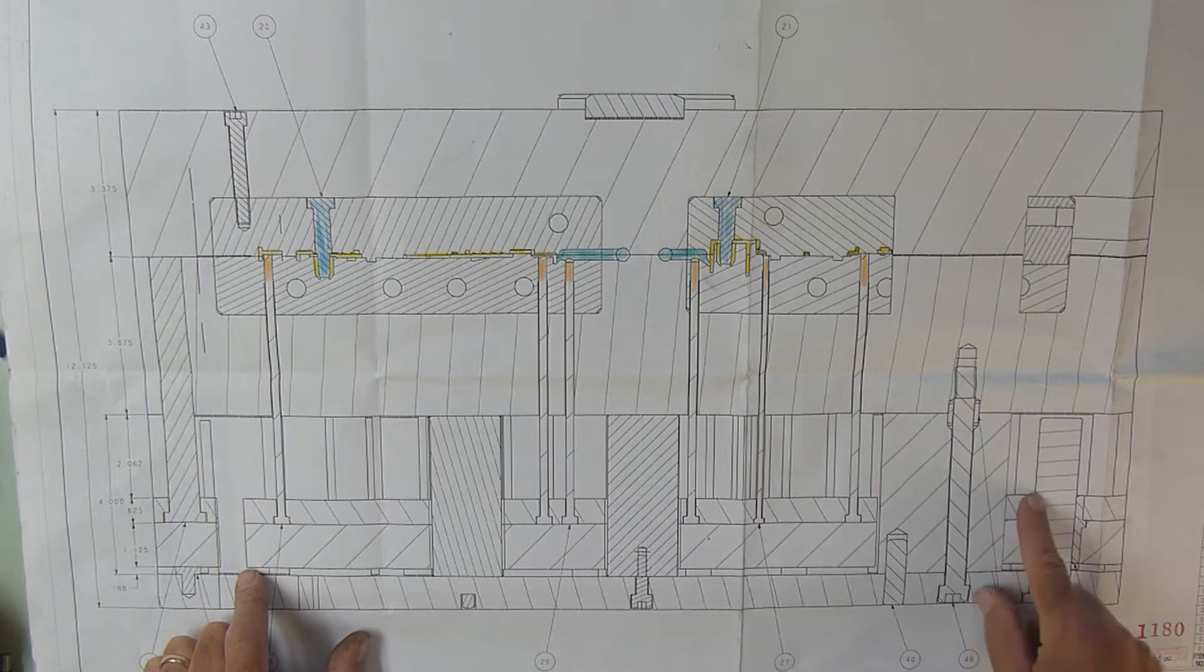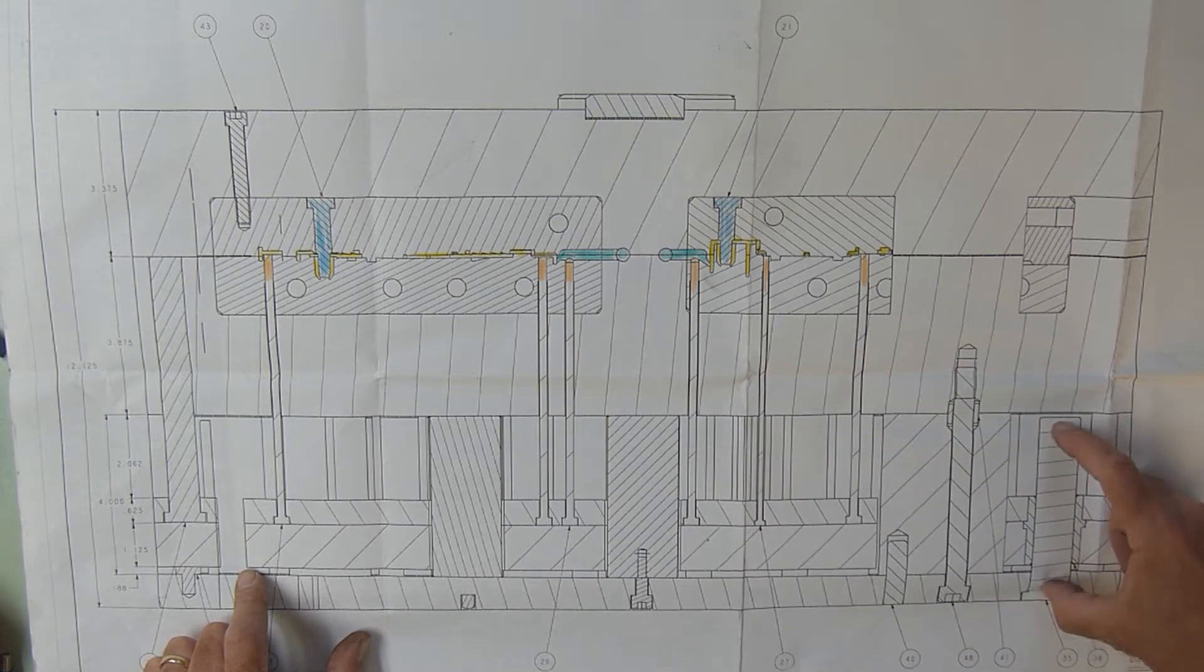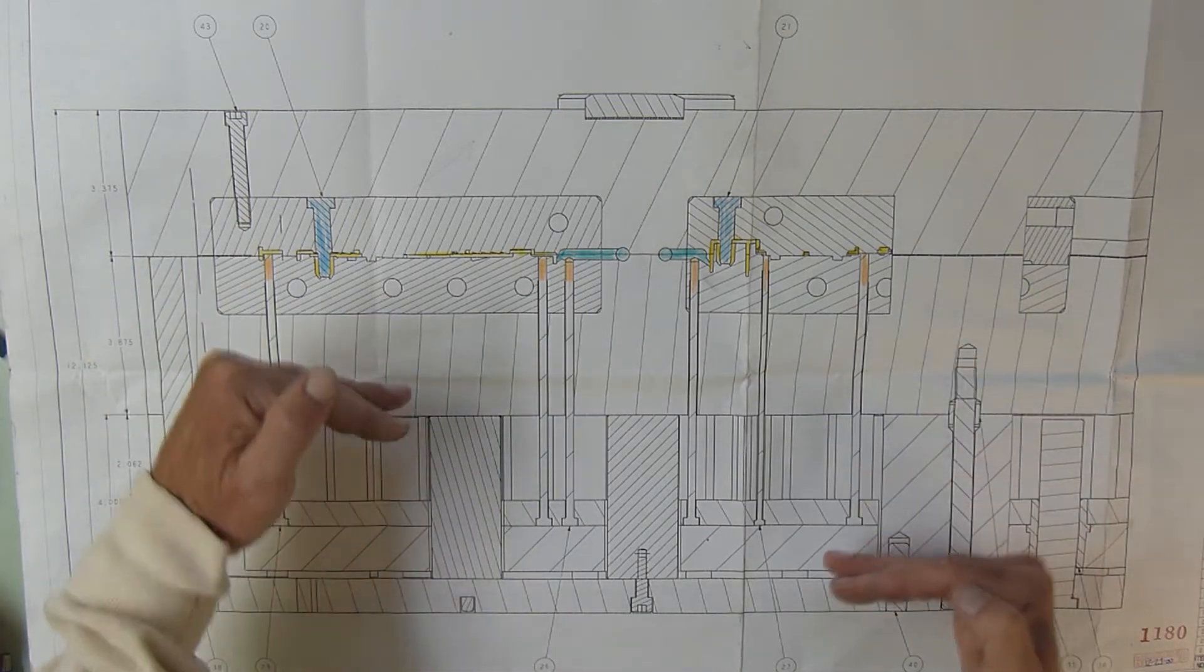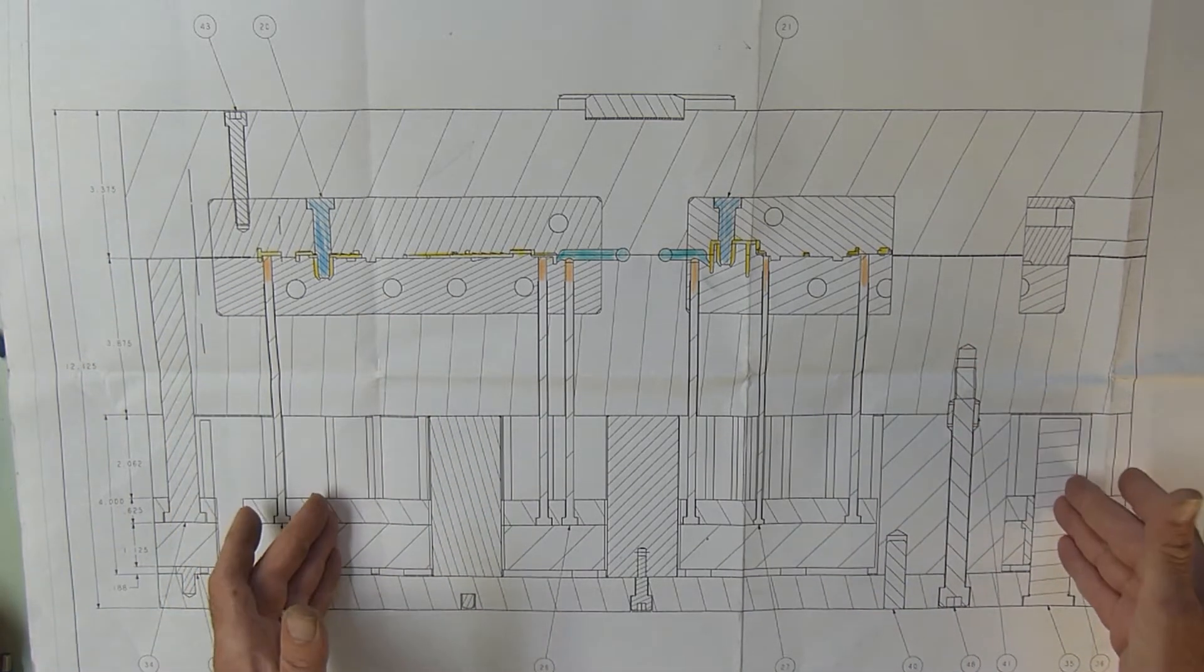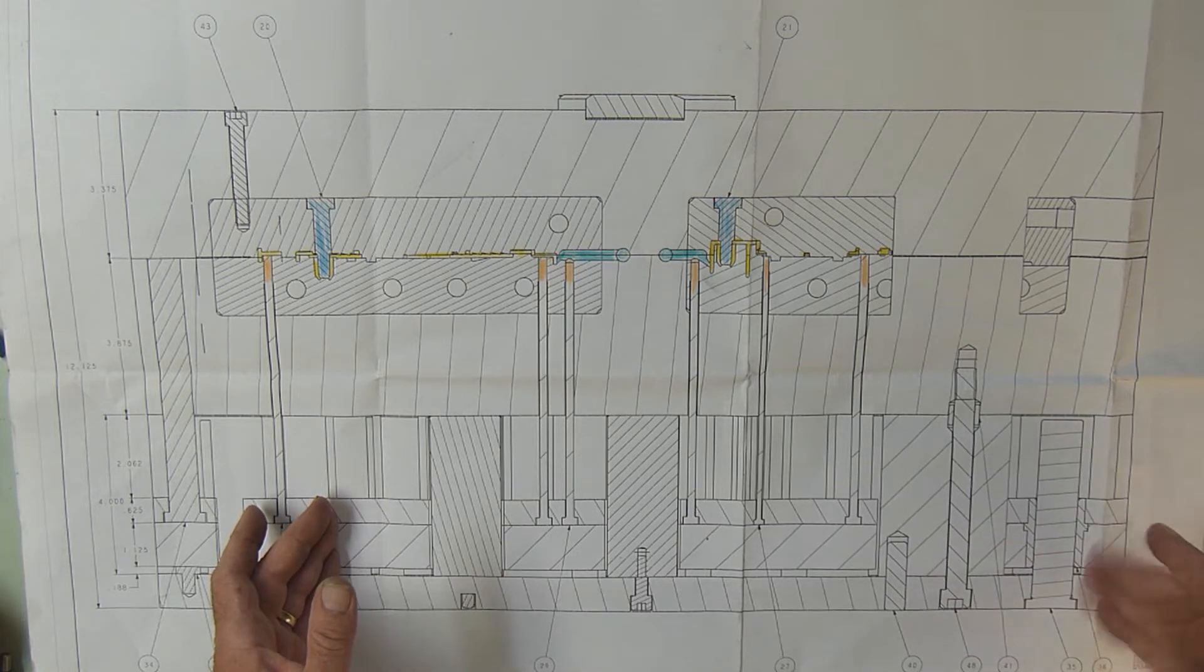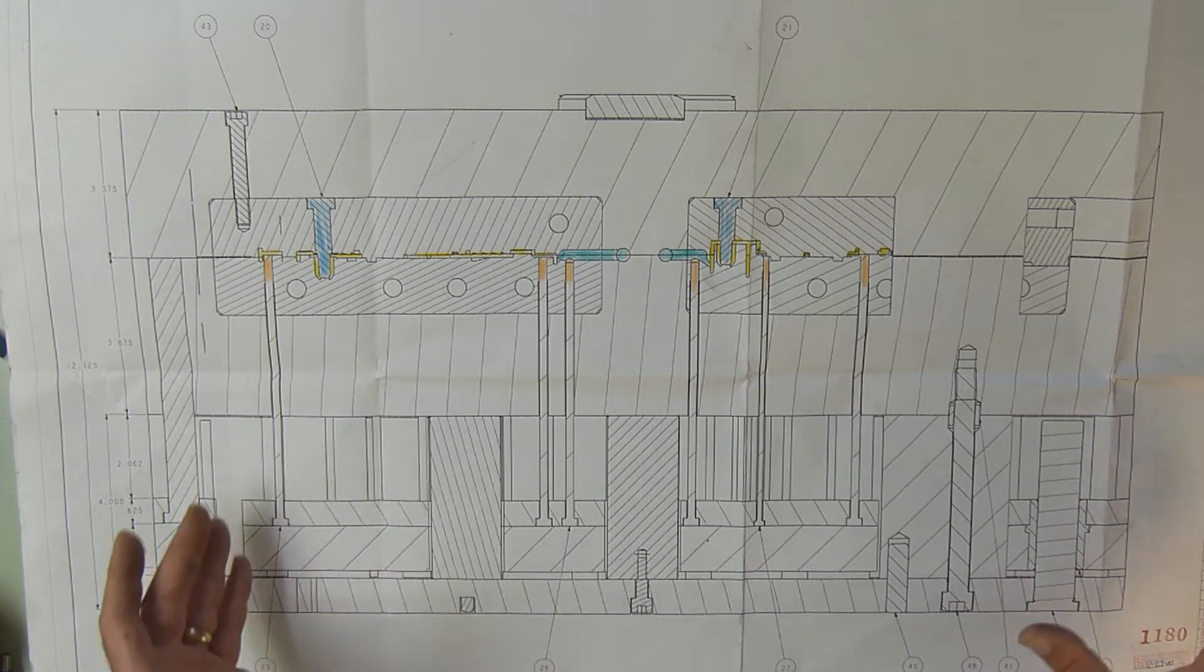It's just a bushing between the two plates with a pin that guides the whole ejection system back and forth so it doesn't get cocked. It's four leader pins and four bushings—fairly inexpensive to put in. It does make the mold run a lot more uniform.